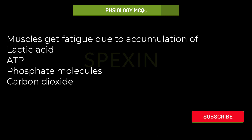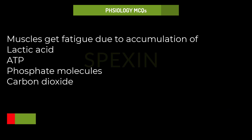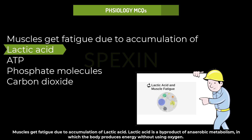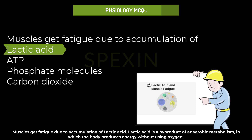Muscles get fatigue due to accumulation of: lactic acid, ADP, phosphate molecules, or carbon dioxide? Muscles get fatigued due to accumulation of lactic acid. Lactic acid is a byproduct of anaerobic metabolism, in which the body produces energy without using oxygen. Since the discovery of lactic acid, the popular notion has been that it is responsible for muscle fatigue.